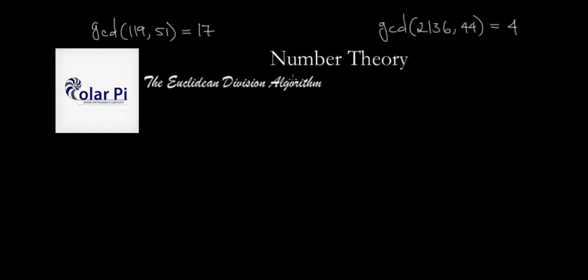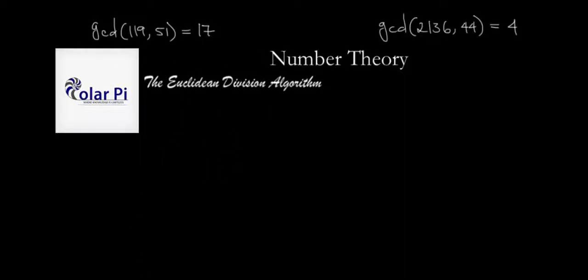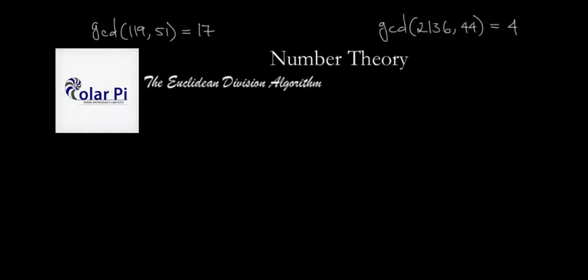In this video I'm going to talk about the Euclidean division algorithm. What it helps with is finding the greatest common divisor of any two positive integers. So given any two positive integers, if you want to find their greatest common divisor, the Euclidean division algorithm is your best friend.